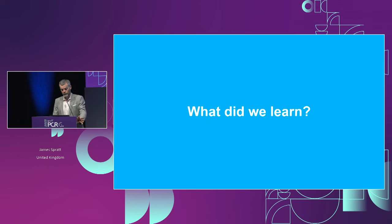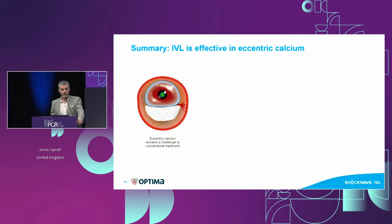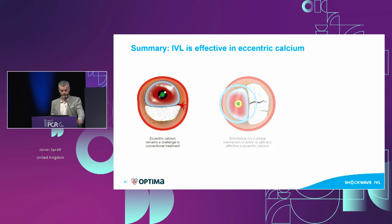What did we learn from this? Firstly, that we don't really have a good therapy up to now in eccentric calcium — it's a real challenge to treat with balloon-based therapies. When we expand the balloon, it expands away from the calcium, and there's only so much space for that to happen. There's a unique mechanism of action with the three forces — compressive, tensile, and shear stresses — which you don't get with any other therapy.